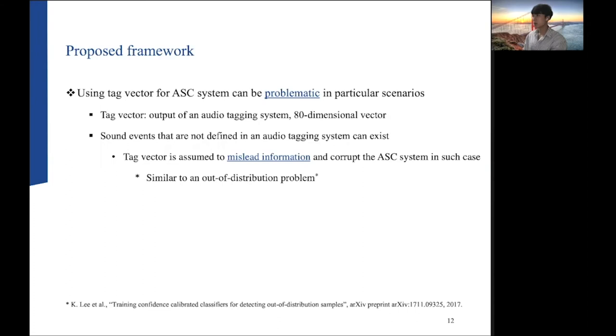In order to recall the previously introduced contents, the tag vector refers to the output of the audio tagging system. Each dimension of tag vector means the posterior probability value of predefined sound events, and the tag vector we use has 80 dimensions. However, sound events that are not defined in audio tagging system can exist in the input recording. In this case, the tag vector is assumed to mislead information and corrupt the ASC system when using that tag vector. This problem is similar to the out-of-distribution problem reported in the paper below.